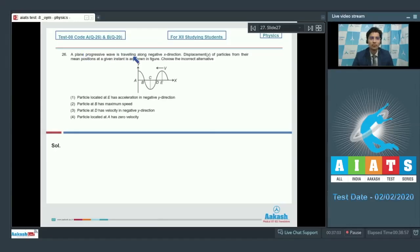As per question number 26, a plane progressive wave is traveling along negative x direction. Displacement of particles from their mean positions at a given instant is as shown in figure. Choose the incorrect alternative. First option, particle located at e has an acceleration in negative y direction. Particle at b has maximum speed. Particle at d has velocity in negative y direction, and fourth, particle located at a has zero velocity.